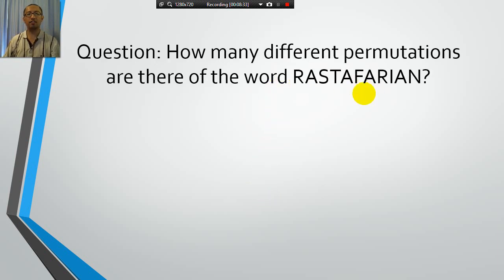Now, applying this formula to this question here. How many different permutations are there of the word, whatever this is, RASTAFARIAN. Sorry if that's actually a proper word. I'm just really bad at pronouncing. Okay, so, let's see how many objects there are. Firstly, we got one, two, three, four, five, six, seven, eight, nine, ten, eleven. There's eleven objects.